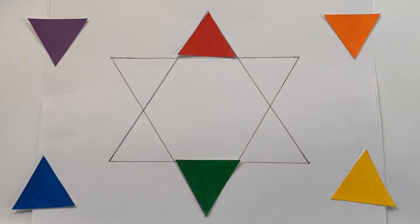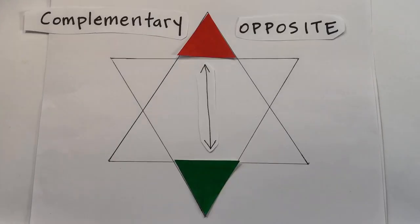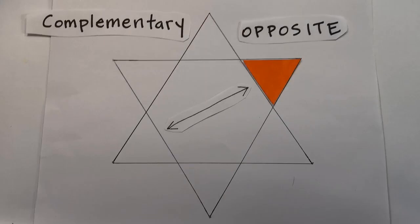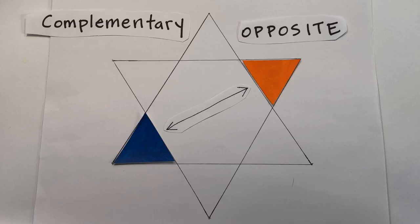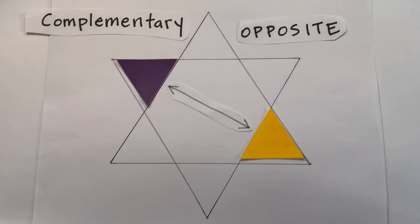Where do you find complementary colors? They're opposite each other on the color wheel. Red and green are complements. The complement of orange is blue. The complement of yellow is purple.